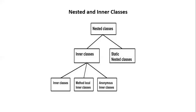Like a class, an interface can also be nested and can have access specifiers. A method local inner class can be declared within a method of an outer class. Static nested classes are not technically inner classes — they are like a static member of the outer class.